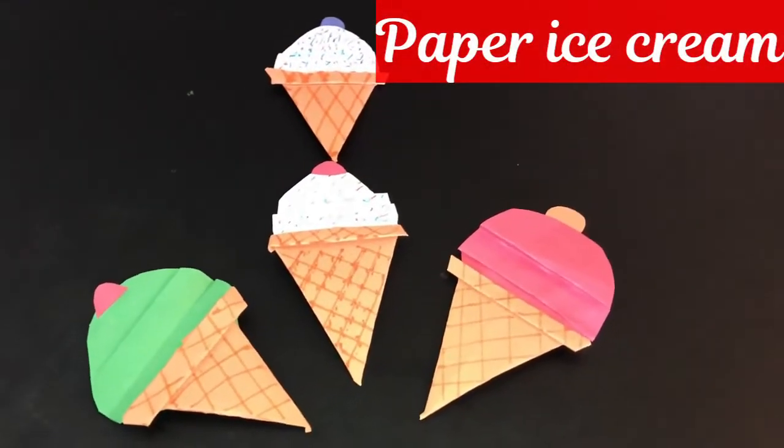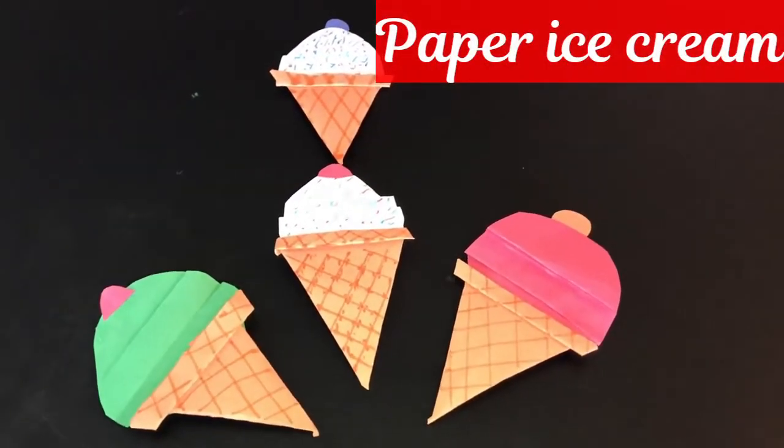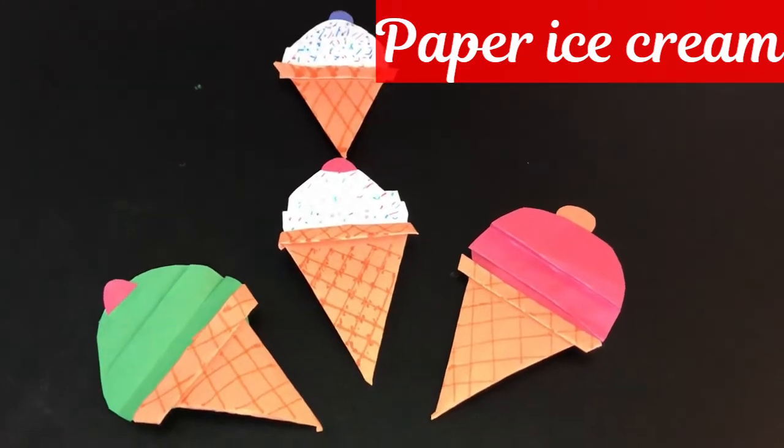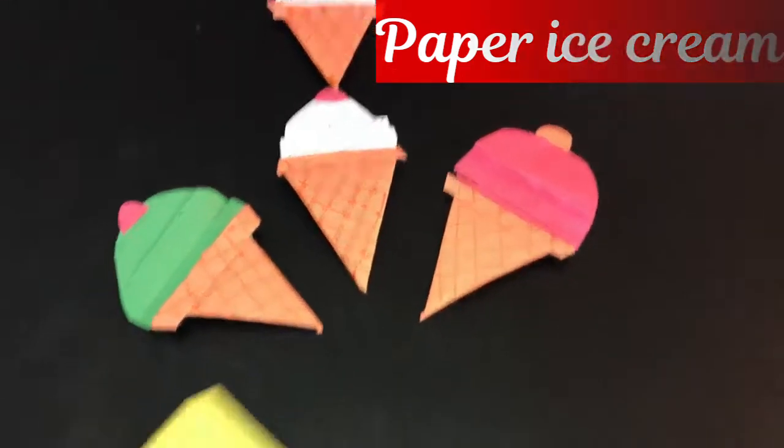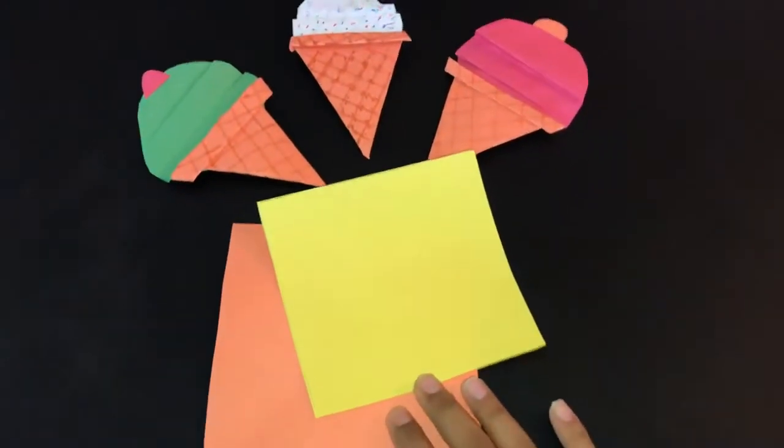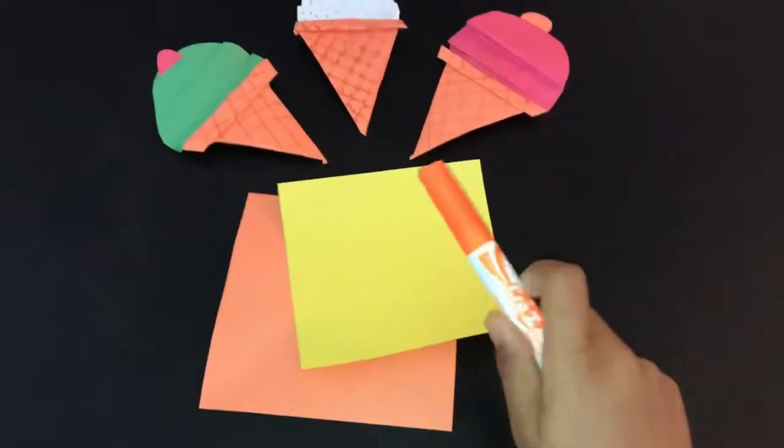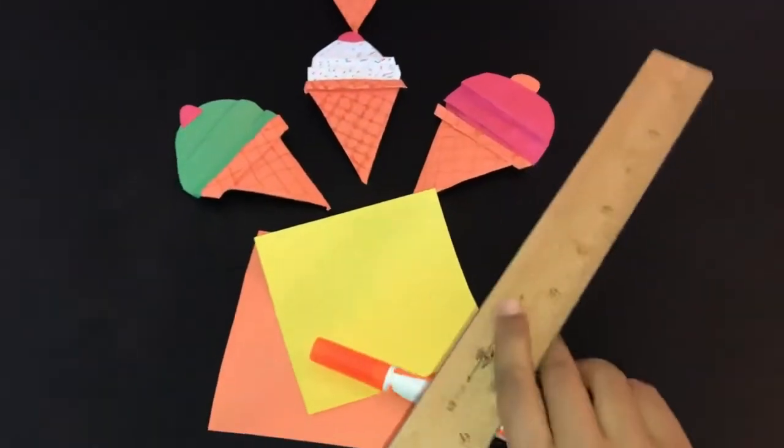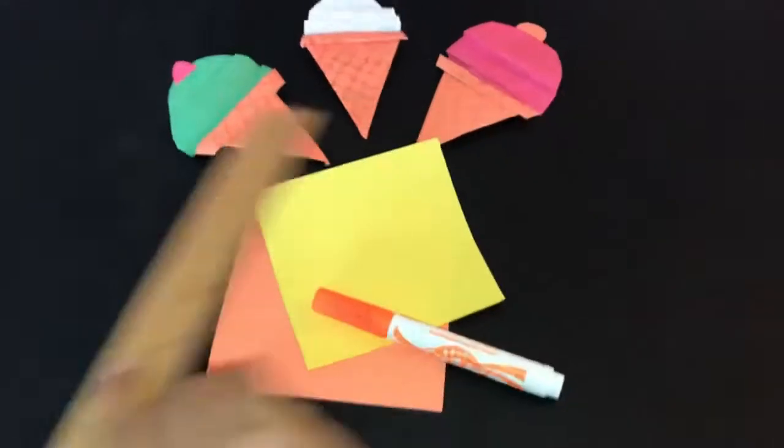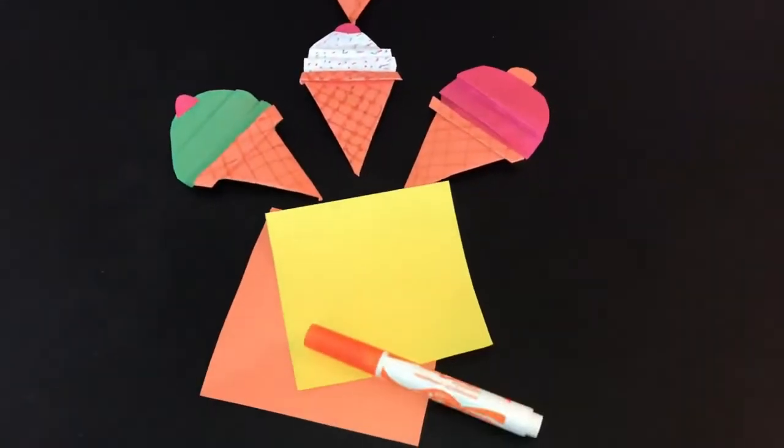Hello everyone, welcome to my YouTube channel. Today we're going to make a paper ice cream. To make a paper ice cream, we need these two square-shaped pieces of paper that can be any size and any color, an orange marker, a ruler, a red paper, and glue.